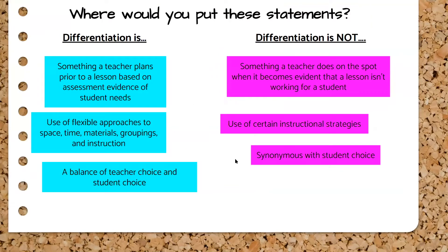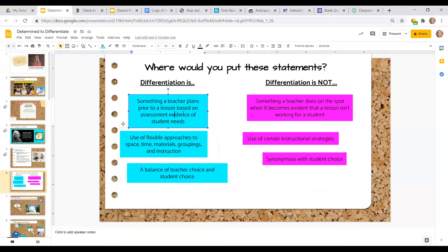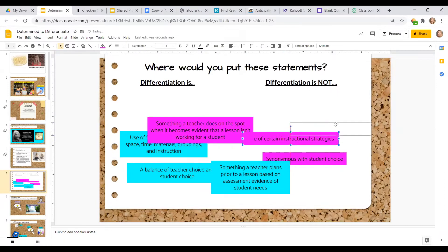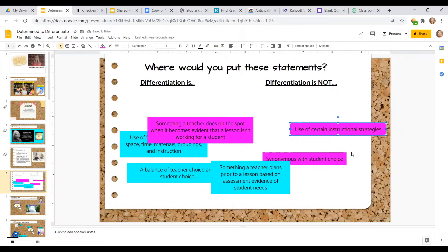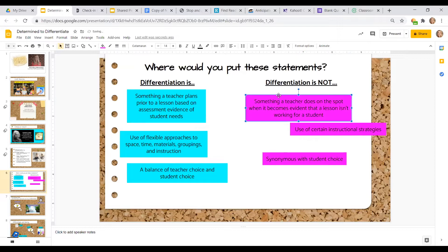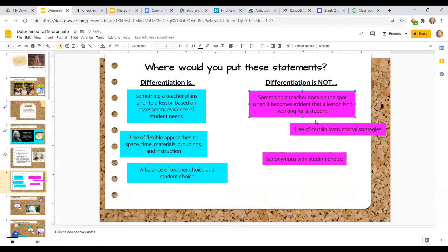You can create a pre-assessment for your students by making a drag-and-drop activity in Google Slides. You'd mix up the statements and have students sort what differentiation is and what it is not. Differentiation is something a teacher plans prior to the lesson based on assessment evidence of student needs. It is not just making on-the-spot adaptations, although we can make those. Differentiation is planned based on information received from student assessment — it isn't simply changing something quickly on the fly when something isn't working. That is not true differentiation.